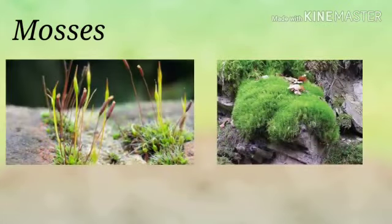Mosses are very small plants. Most of them live in damp and shady places. They don't produce flowers, but they produce spores for reproduction. They have very thin leaves that dry out easily.